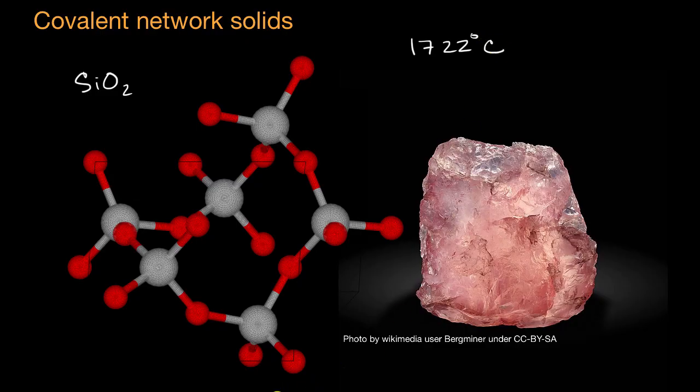So the big takeaway over the last several videos: there are many different ways of forming a solid. It could be with ions, it could be with metals, it could be with molecules that are attracted to each other with intermolecular forces, or you could have a network of atoms formed with covalent bonds.